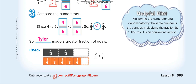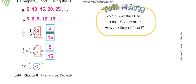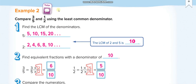Similarly, for 3 over 5 and 1 over 2, we first make the denominators the same. To do that, we find the LCM of the denominators 5 and 2. Write the multiples of 5 and the multiples of 2, and choose the least common one. The least common multiple of 5 and 2 is 10.